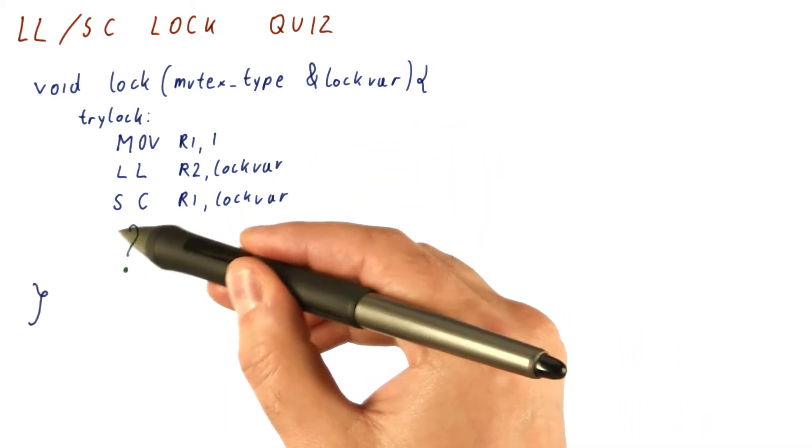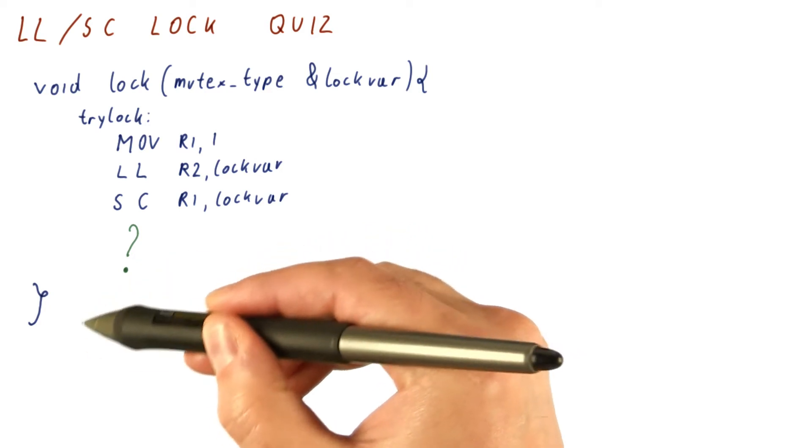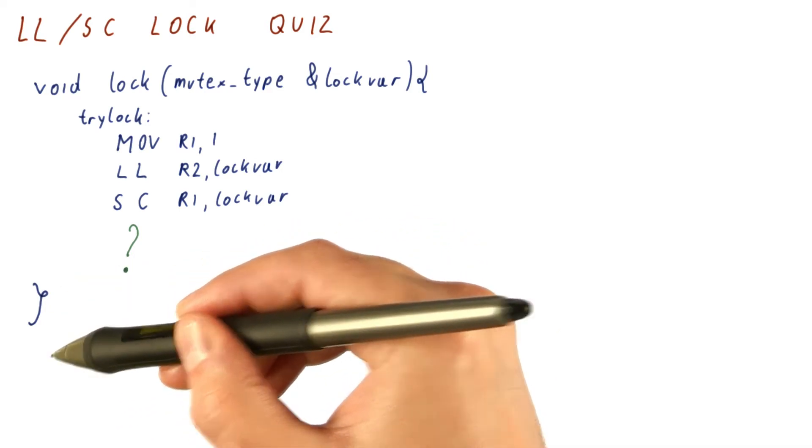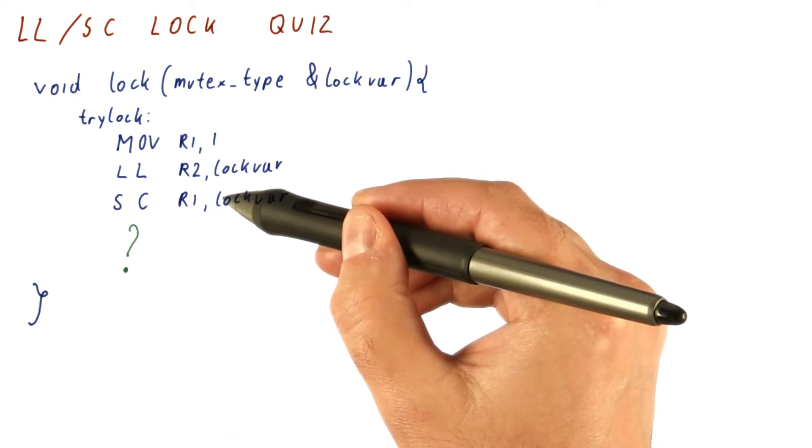So the question for you is what do we put here to complete this lock function in a way that works correctly? That is, if we leave this function, we know that we have acquired the lock and we are the only ones that did so.